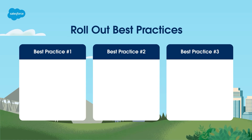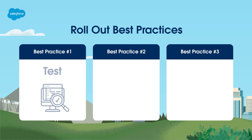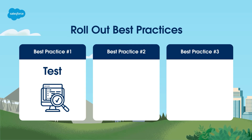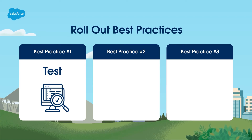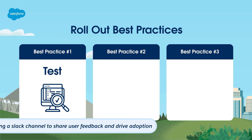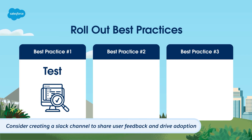Best Practice Number 1: Test. Identify pilot groups made up of Salesforce power users, team leads, and executive sponsors who will test features and processes, act as a champion for the tool, and report back with their findings. Consider creating a Slack channel to share user feedback and drive adoption.